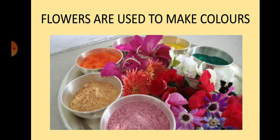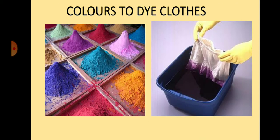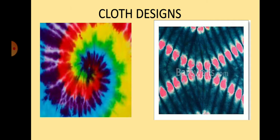Do you know flowers are used to make colors also? Flowers used to make colors are marigold, genia, hibiscus, bluebill, etc. These colors are used to dye or color the clothes. Look here the beautiful patterns of cloth designs.